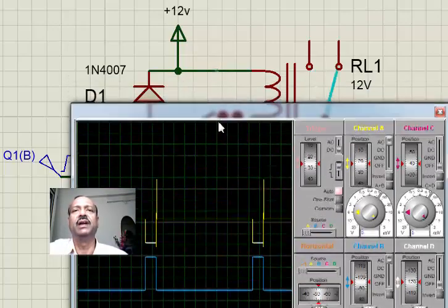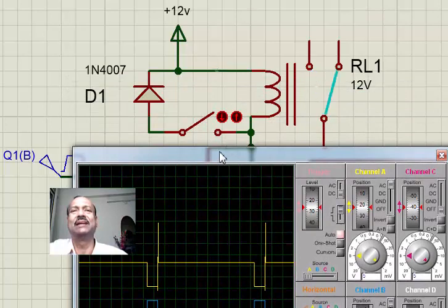And people call it freewheel diode, people call it snubber circuit, people call it dv by dt, so many terms they use. They are, of course, as far as the engineering concept is concerned. But in layman's language, it's very simple.